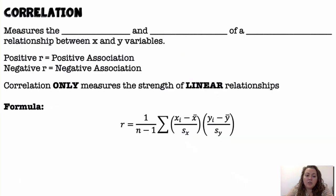Alright, correlation. Correlation measures the strength and direction of a linear relationship between X and Y variables. Alright. So, positive R values correlate with a positive association. Negative R values mean we have a negative association. Alright, correlation only measures the strength of linear relationships.